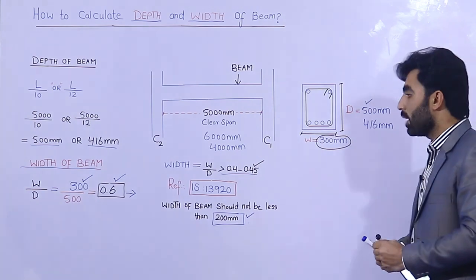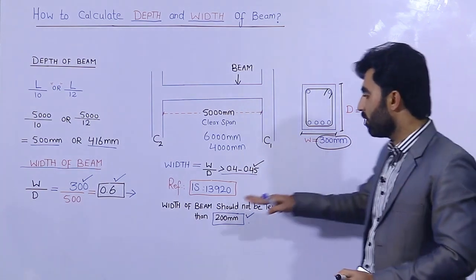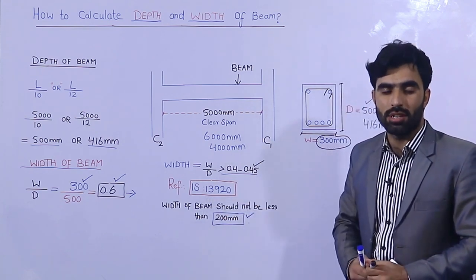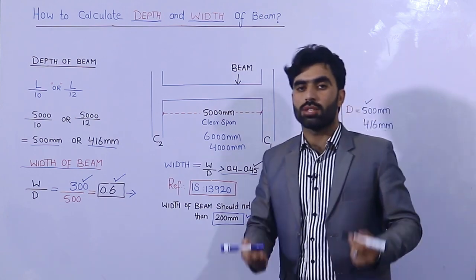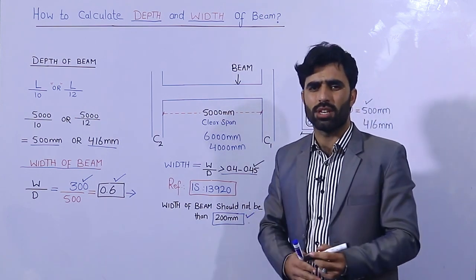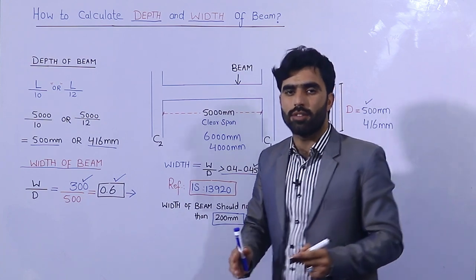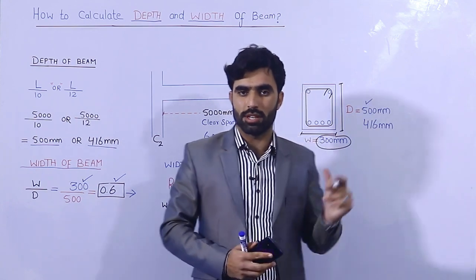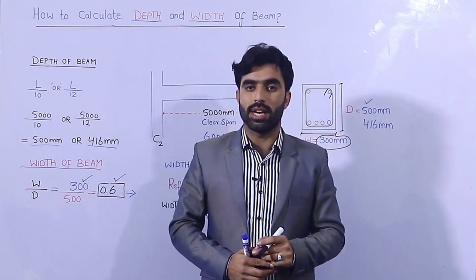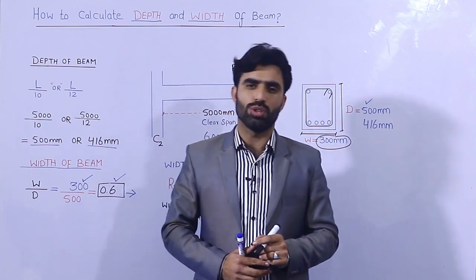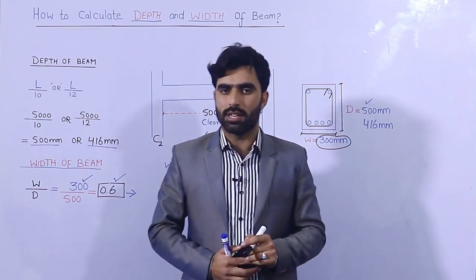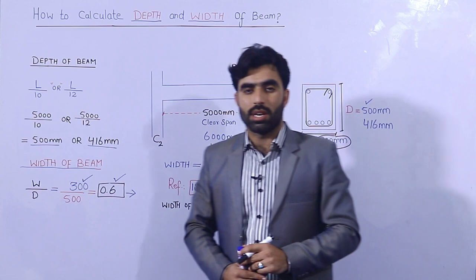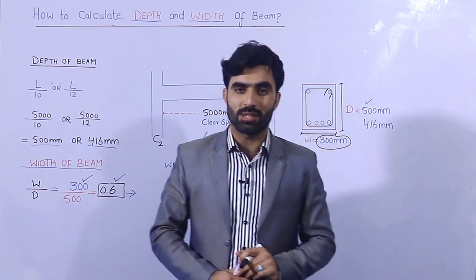This is the way to find the depth and width of the beam from IS 13920 by thumb rule — not by structural steel design, because for that we need to know about structural loads on beam, column, foundation, and everything. This easy method is especially for people who don't know civil engineering. They can use this formula to find depth and width of the beam for two-story or three-story buildings. Hope this short video helps. Thanks for watching — see you in the next video.